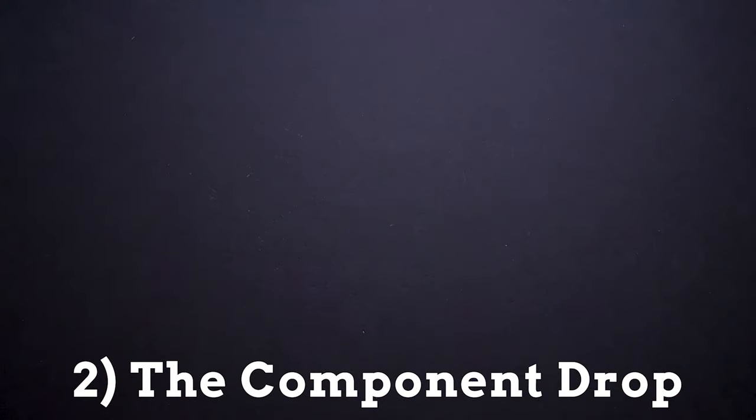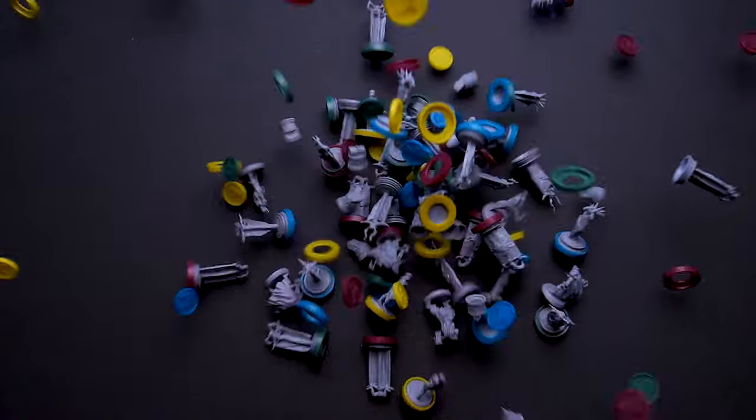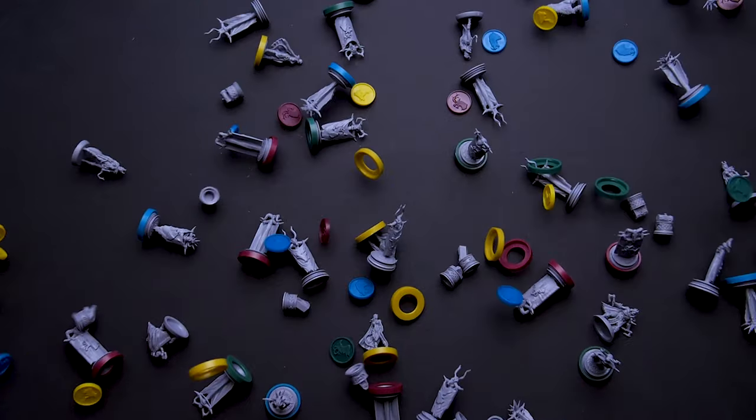The second technique we're going to be talking about today is the component drop. This one is definitely not for the faint of heart because if you're not willing to break a few pieces, then don't even bother. But if you've got the guts, then you can create some really cool shots. A component drop can be anything from one single component dropping onto a surface to dumping more than 1,500 meeples onto the ground from 12 feet in the air. The success of your component drop depends on two things: knowing how to properly shoot slow motion, and creativity.